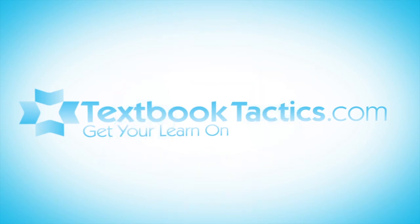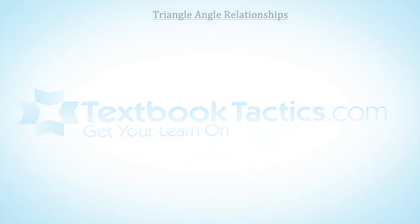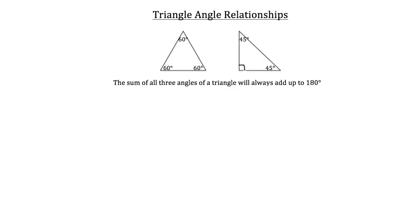Today we're going to talk about triangle angle relationships. There are a couple of relationships that are very important for you to know. The first relationship is that the sum of all three angles of a triangle will always add up to be 180 degrees.